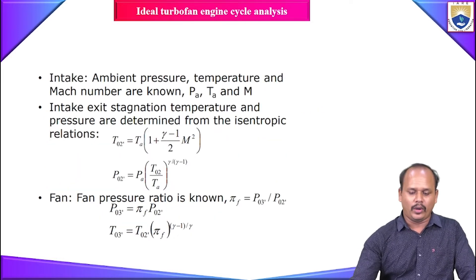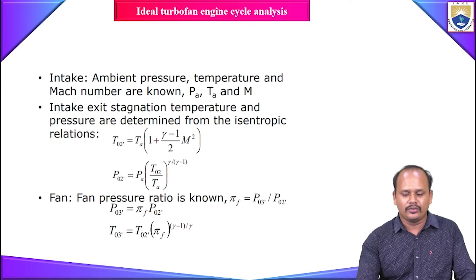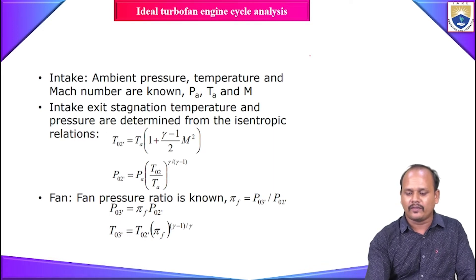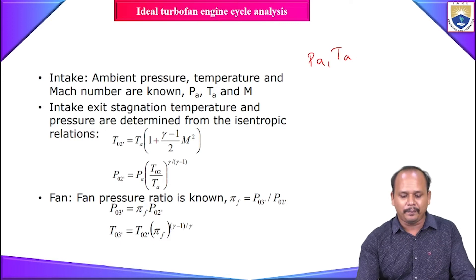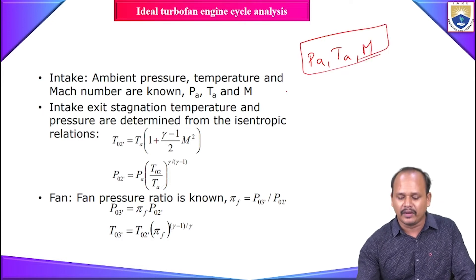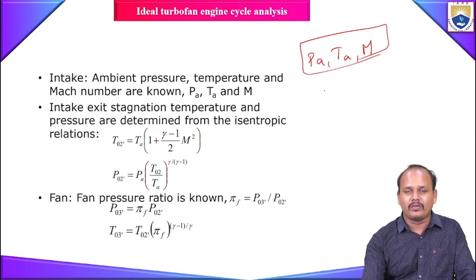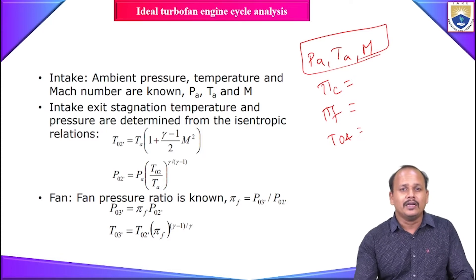Let us start with station A to 1. The ambient condition is determined by the altitude at which the aircraft is flying — that will be given, whether at sea level or a certain altitude. From that we find pressure and temperature. The Mach number of flight will also be given. The design parameters include compressor pressure ratio π_c and fan pressure ratio π_f. The design limiting parameter is T04, the temperature at the exit of the combustion chamber (inlet to the turbine).